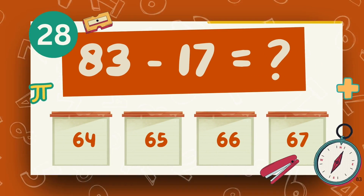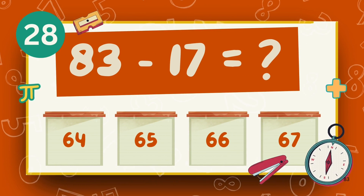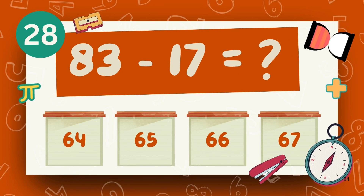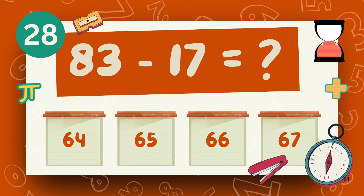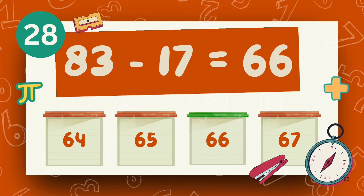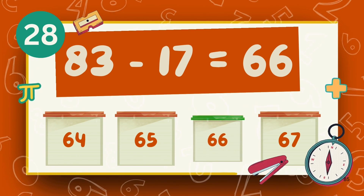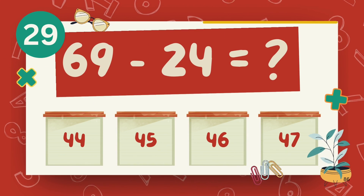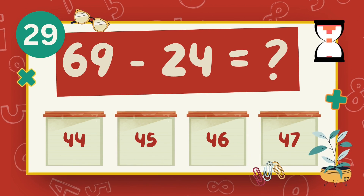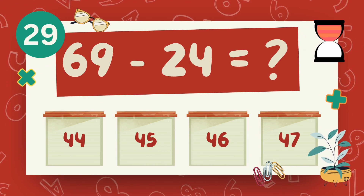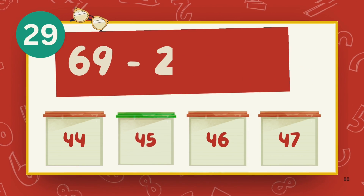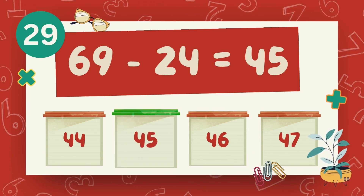What is 83 minus 17? The answer is 65. What is 69 minus 24? The answer is 65.